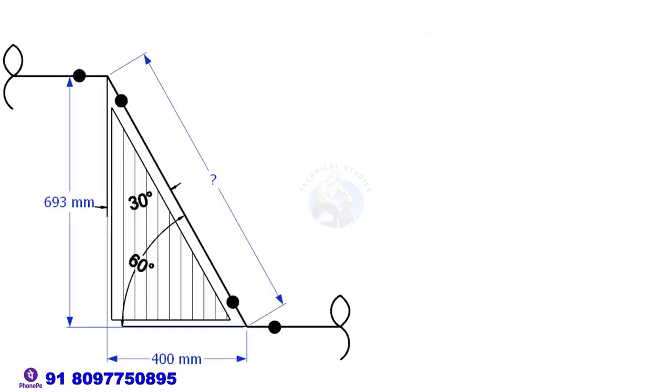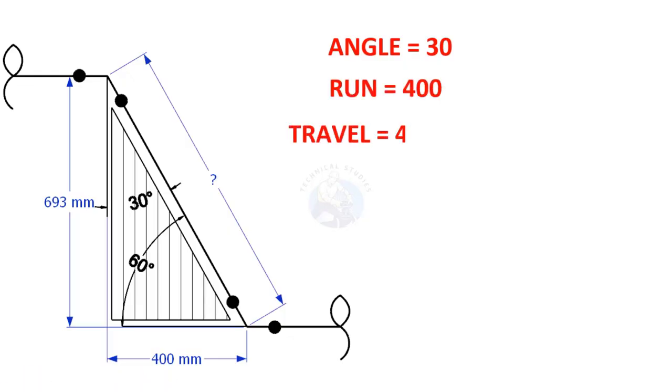Finally, the travel length. To calculate the travel length, multiply the value of the run with 2. So the value of the travel length is 800.